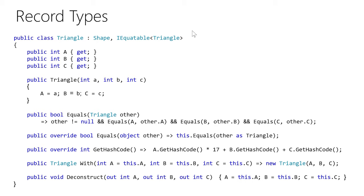Another thing it implements is the with method. The with method returns a triangle and allows us to say: I want this particular triangle but with a different value for side A, B, or C — meaning we have an immutable triangle, and to get a different triangle you create a new instance. It's like taking a copy and modifying some properties. We're in a world where we don't want to mutate objects, especially in parallel or asynchronous programming. It also generates the Deconstruct method at the bottom, which allows deconstructing into a tuple for pattern matching. The hard part of implementing record types in the compiler is figuring out how to handle inheritance when both records are immutable.